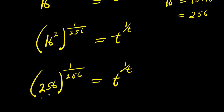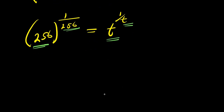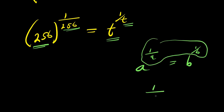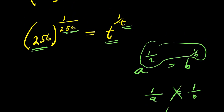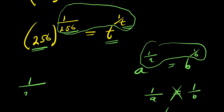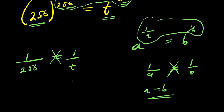Now we have 256 here and 256 here, and t here and t here. This matches the identity: if a power 1 over a equals b power 1 over b, then a equals b. Applying this, 1 over 256 equals 1 over t. Cross multiplying gives t times 1 equals 256 times 1, so t equals 256.